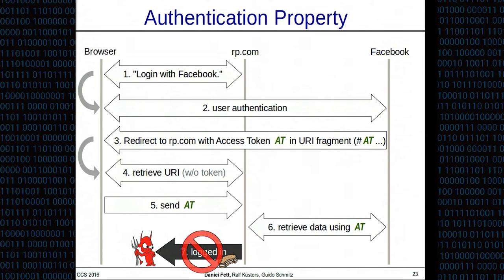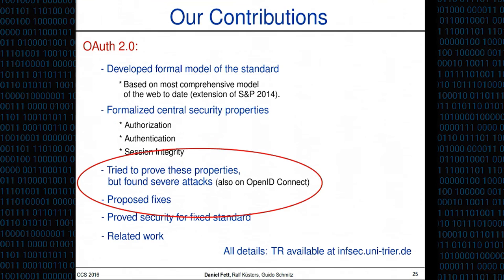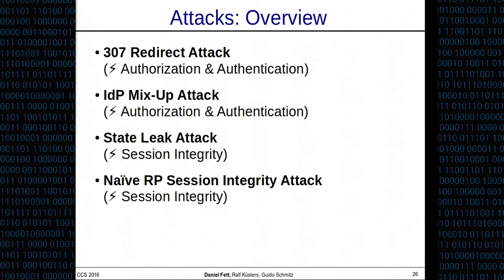We have a third property that is a bit less obvious: the session integrity property. Session integrity says that if a relying party acts on the user's behalf at Facebook, then the user explicitly expressed consent to sign in at this relying party using Facebook. This captures attacks resulting from cross-site request forgery or session swapping. These are our three security properties.